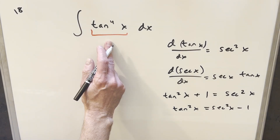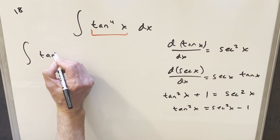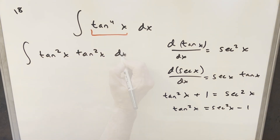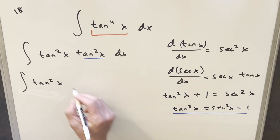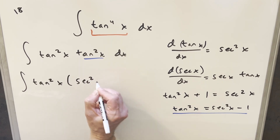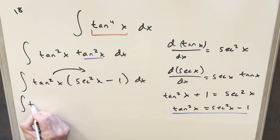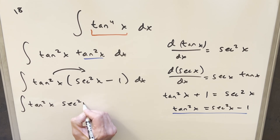Coming back to our integral, I can split tan to the fourth x as tan squared x times tan squared x. Then I'll use the identity on one of the tan squareds to rewrite it as tan squared x times the quantity secant squared x minus 1 dx. Distributing, the first term is tan squared x times secant squared x.